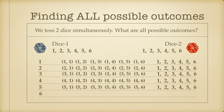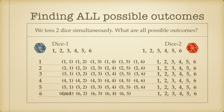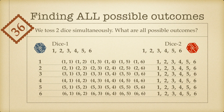And finally, when we get the number six on dice one, the outcomes are (6,1), (6,2), (6,3), (6,4), (6,5), and (6,6). So in total that is six plus six plus six plus six plus six plus six, giving us a total of 36 possible outcomes when we roll two dice at the same time.